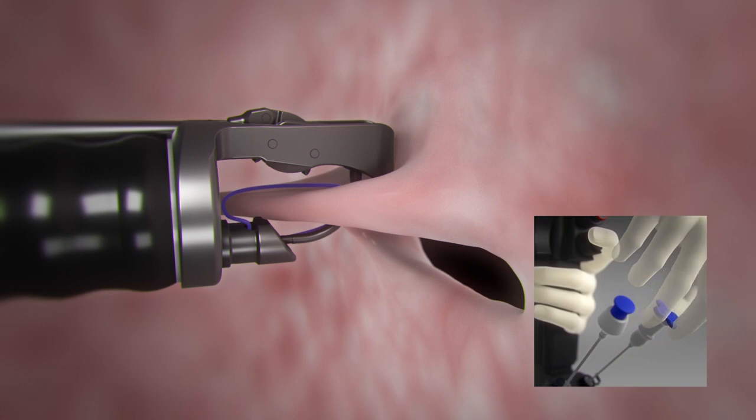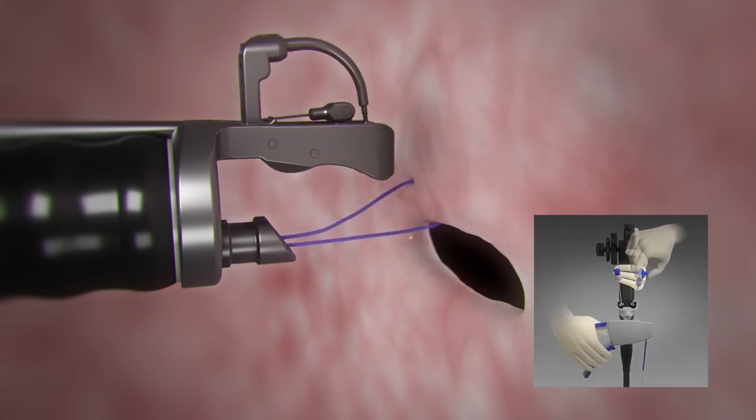Turn the tissue helix counterclockwise to release from the tissue and pull the blue knob to retract helix. Finally, open the needle driver handle. Repeat steps for additional full thickness suture placement.